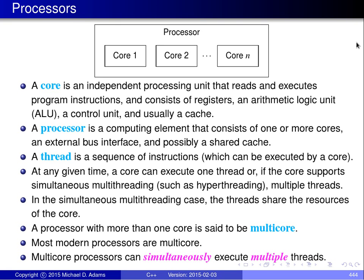A processor is a computing element that consists of one or more cores. A processor also has an external bus interface so it can talk to the outside world, and typically a shared cache that's shared amongst the different cores in the processor. A thread is simply a sequence of instructions that can be executed by a core. A core can execute at least one thread. If a core supports simultaneous multithreading, it can execute multiple threads, which then share the resources of the core.